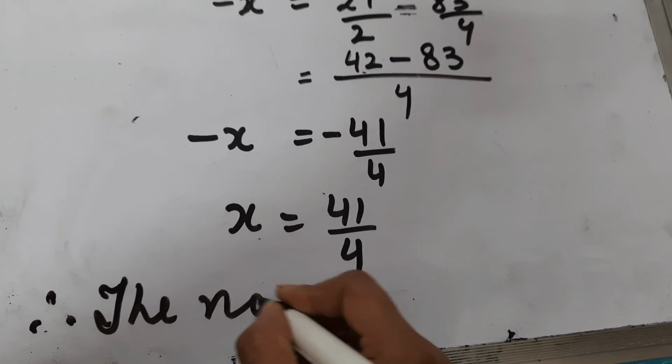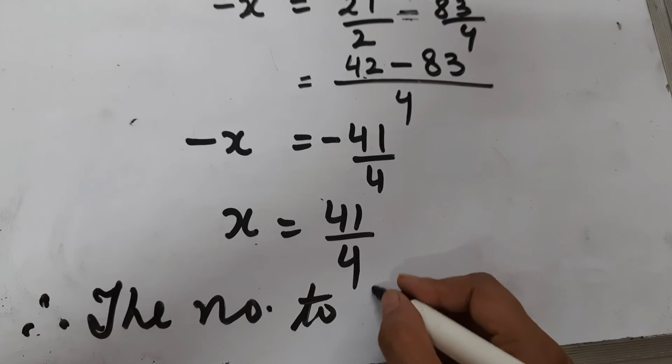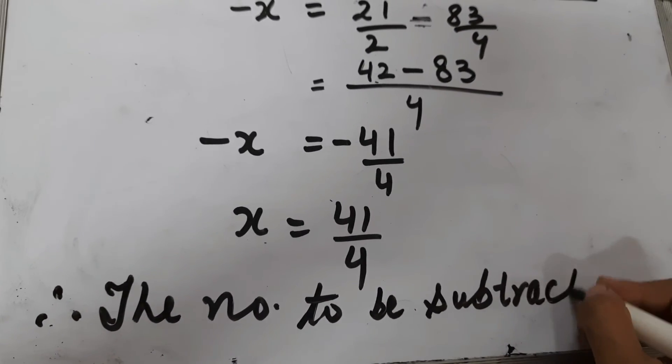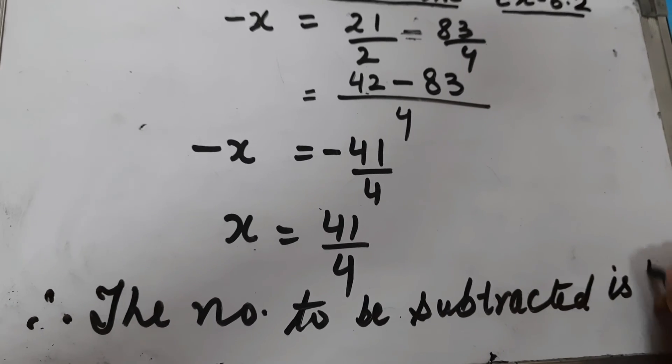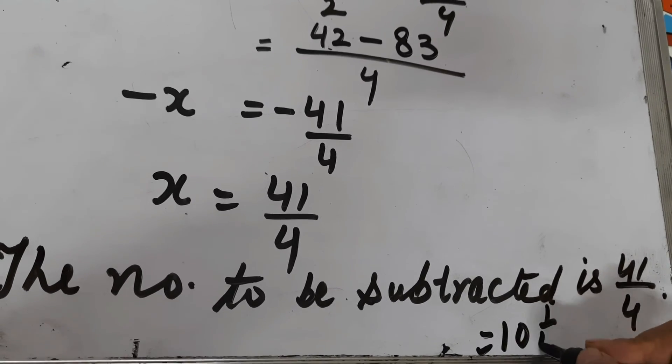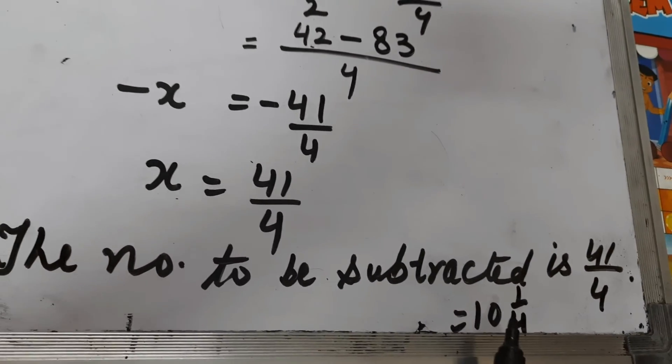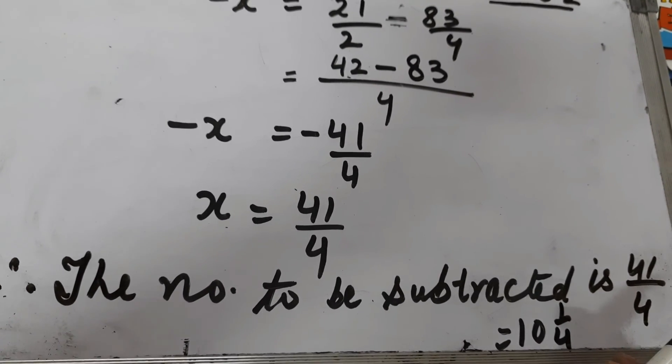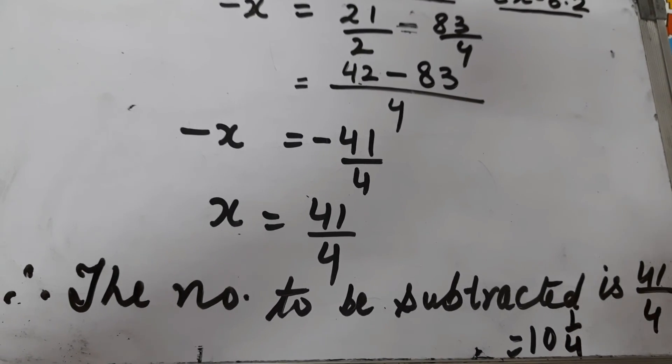41/4. The number to be subtracted is 41/4, or you can say 10 1/4. The number to be subtracted is 10 1/4. So this is question number 6 of exercise 6.2.